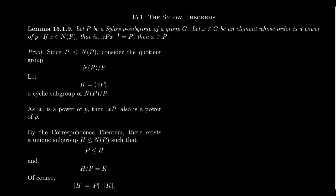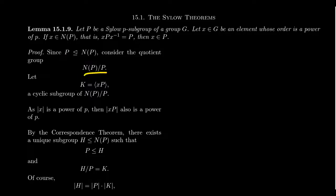To prove this, note that normalizers always contain the subgroup they're normalizing as a normal subgroup. The normalizer N_G(P) is the maximal subgroup for which P is normal inside it. Since P is normal in its normalizer, we can form the quotient group N_G(P) mod P. Consider this quotient group and take the coset xP, then the cyclic subgroup K generated by xP inside this quotient group.